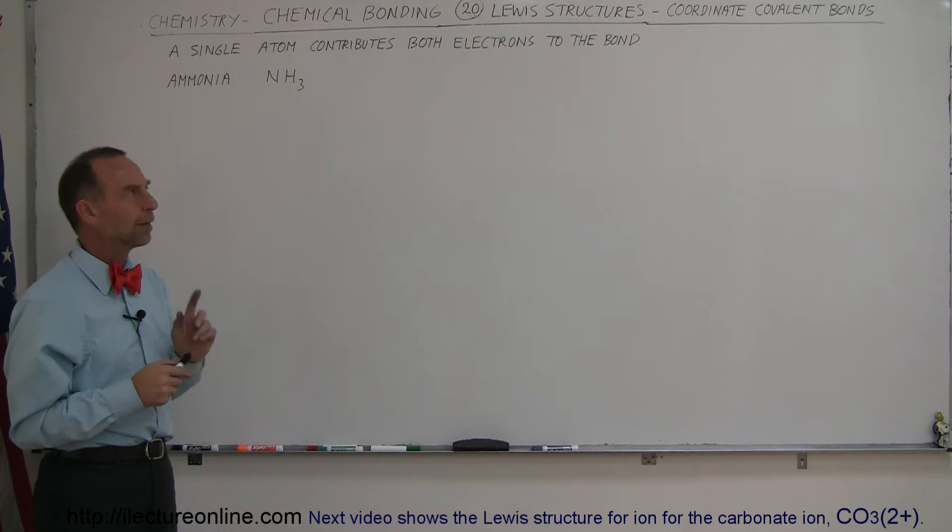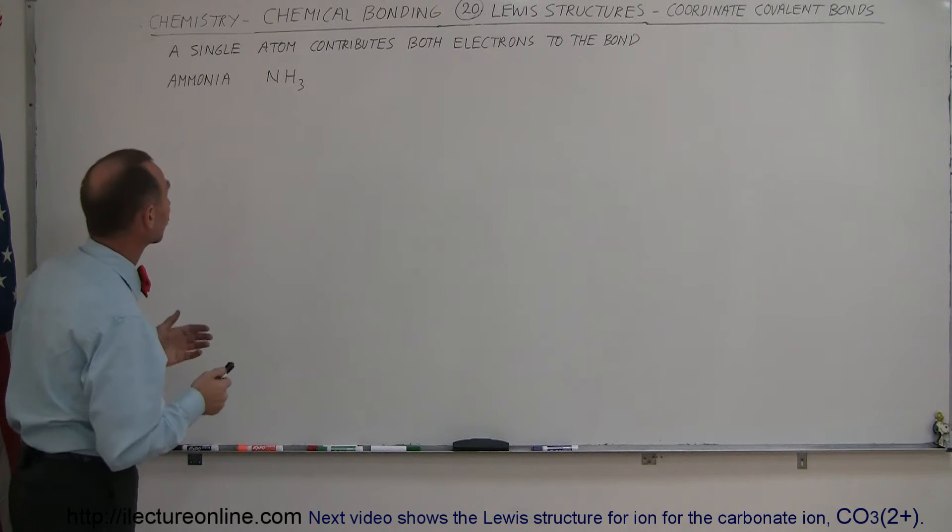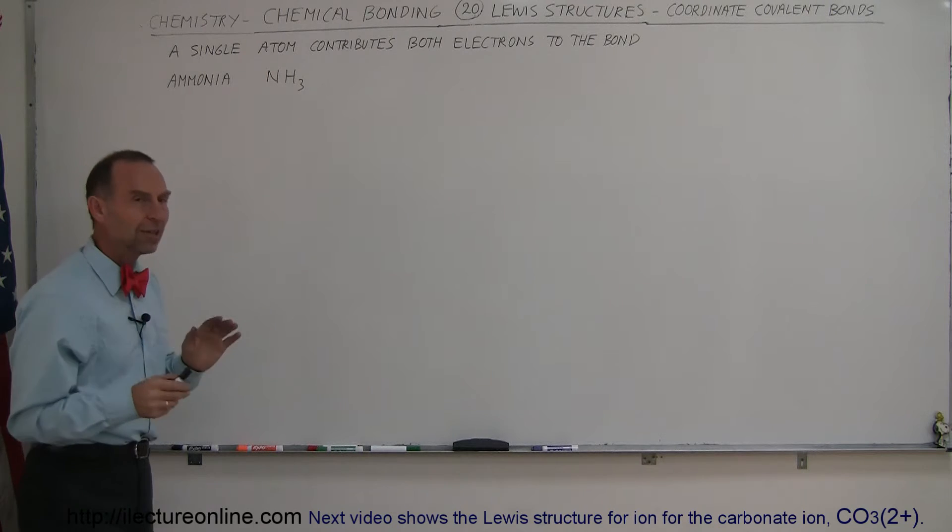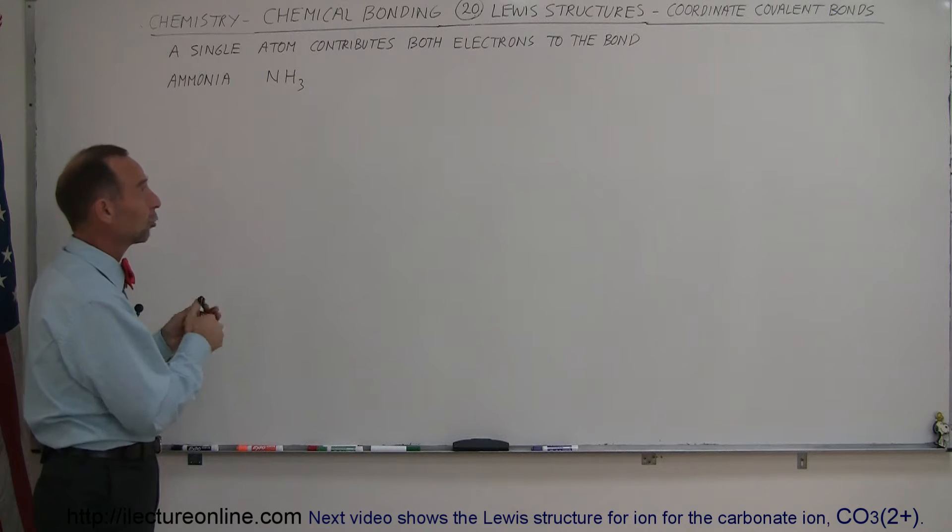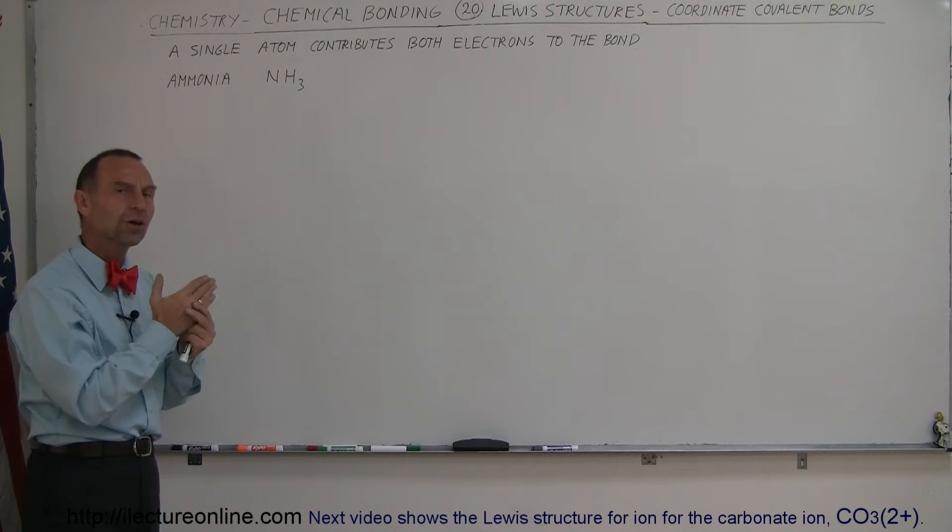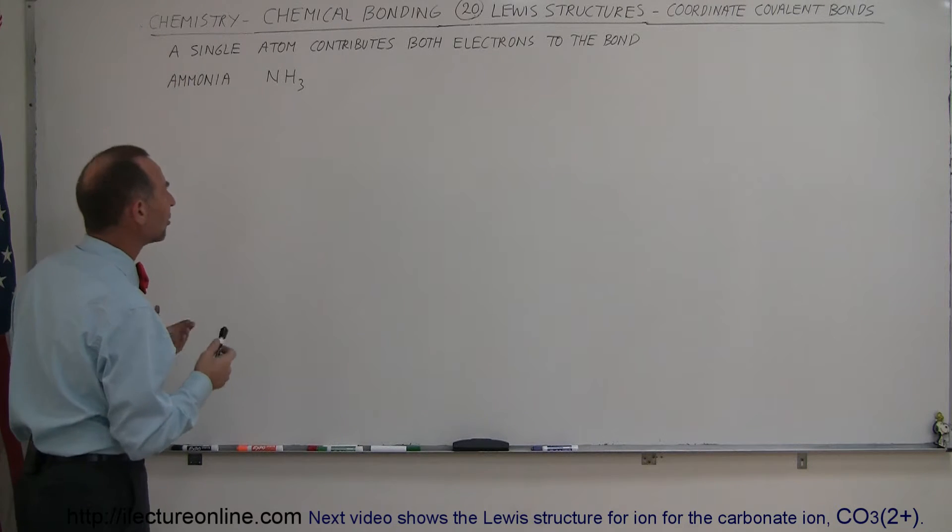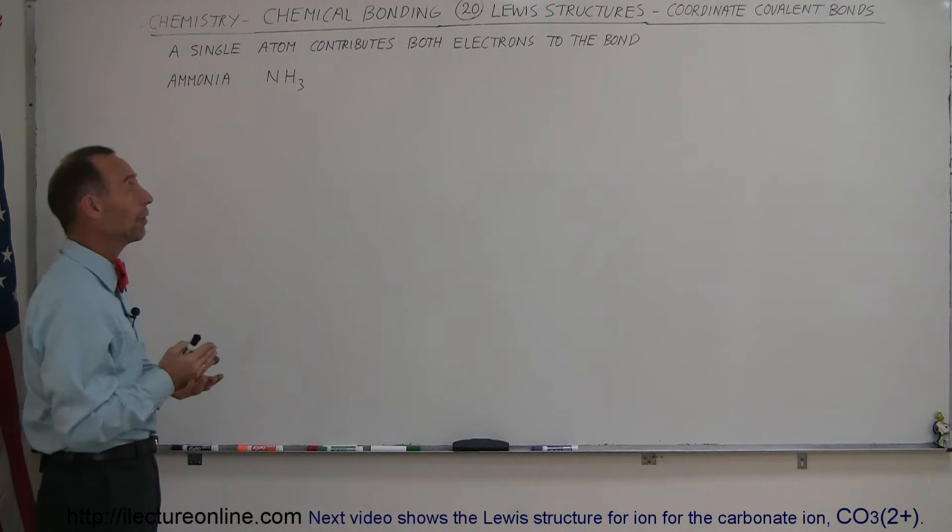So how does that work? Well, first of all, let's draw the Lewis structure of ammonia. This particular Lewis structure will not include a coordinate covalent bond, but it's a start of what I will show you that has a coordinate covalent bond.